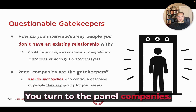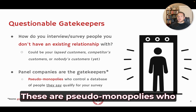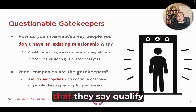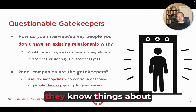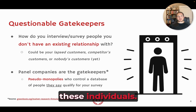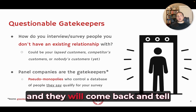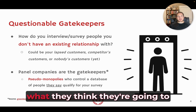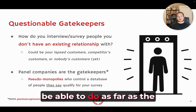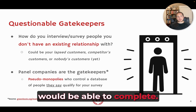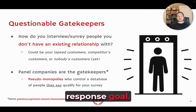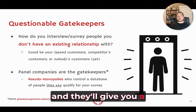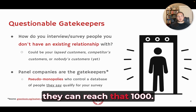So what do you do? You turn to the panel companies. These are pseudo-monopolies who control a database of people they say qualify for your research. They will go to their database and come back with their incidence rate — what they think they can deliver in terms of completed surveys. It's very typical for a project to have a 1,000 survey response goal, and they'll give you a reasonable assessment of whether they can reach that.